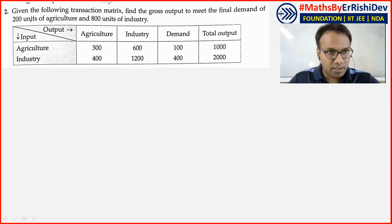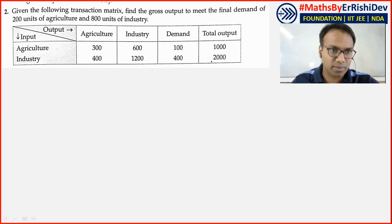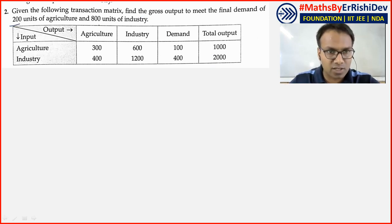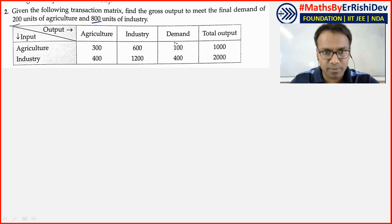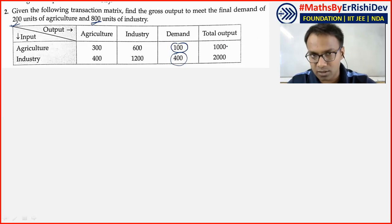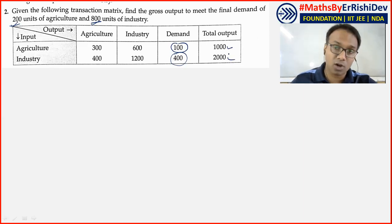Given the following transaction matrix, find the gross output to meet the final demand of 200 for agriculture and 800 for industry. The current demand is 100 and 400; when this demand is increased to 200 and 800 respectively, the gross output — currently 1000 and 2000 — how much will it be?